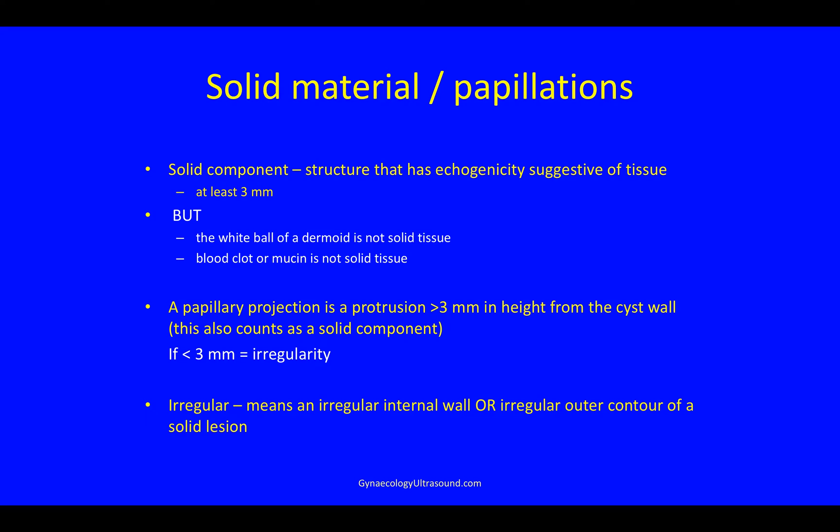A solid component is a structure that has the echogenicity suggestive of tissue, but it has to measure at least three millimetres. The white ball of a dermoid is not solid tissue, and blood clot or mucin is not solid tissue. A papillary projection is a protrusion of three millimetres or more in height from the cyst wall — this also counts as a solid component. If it's less than three millimetres in height, it's an irregularity, and if it's less than three millimetres in any diameter, it is not solid.